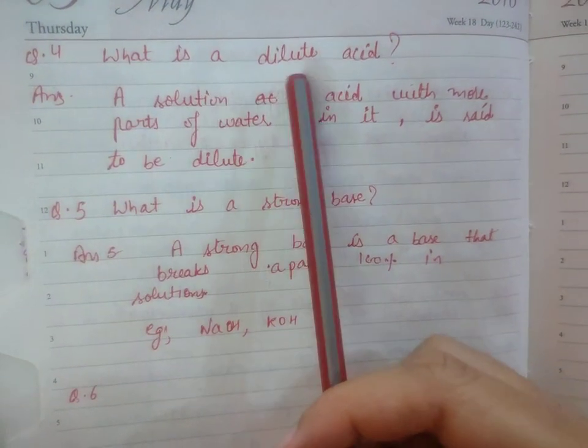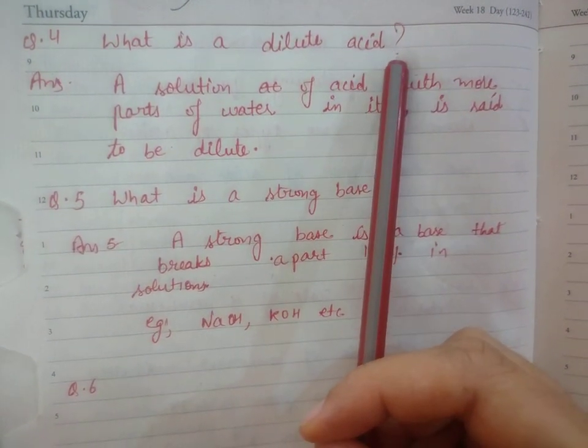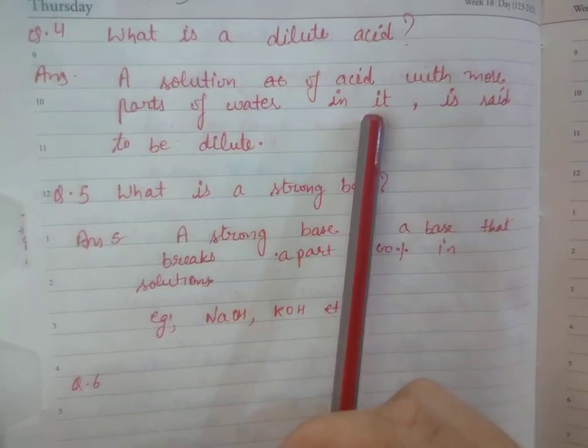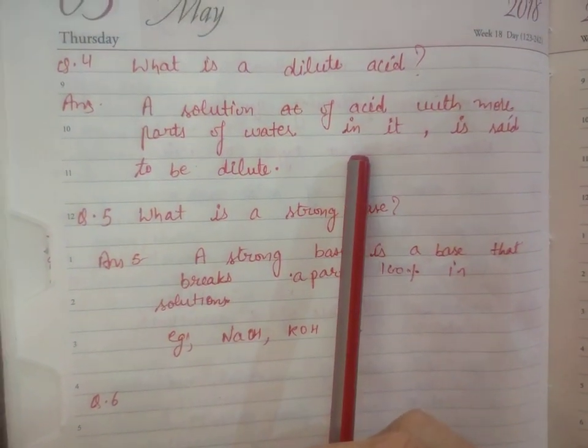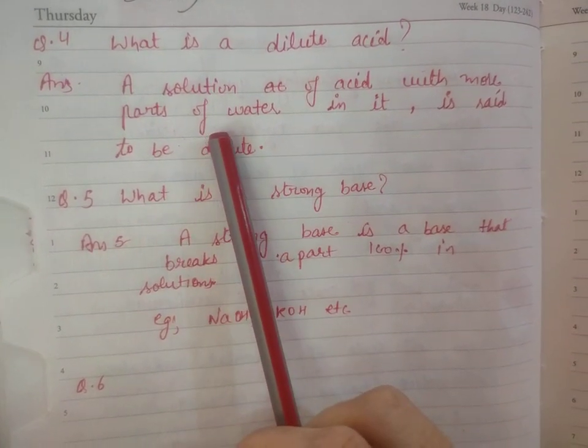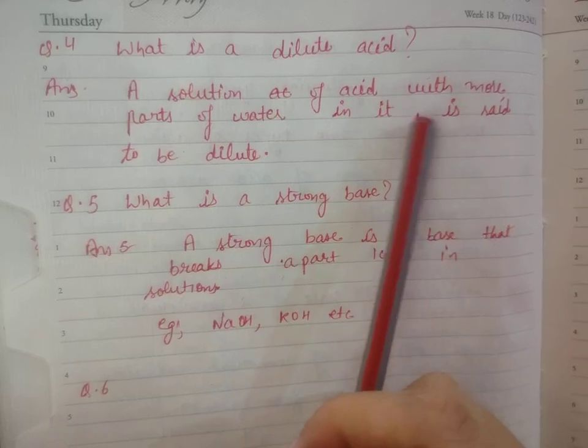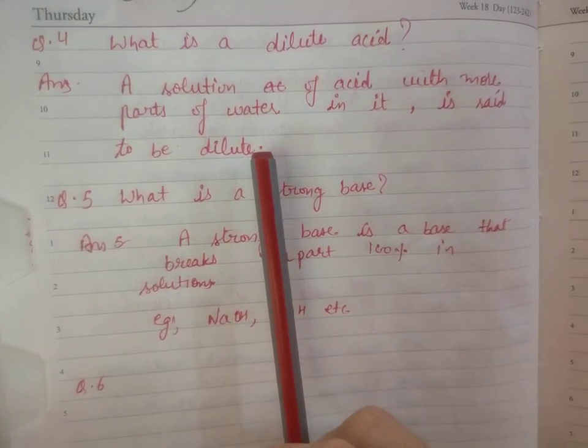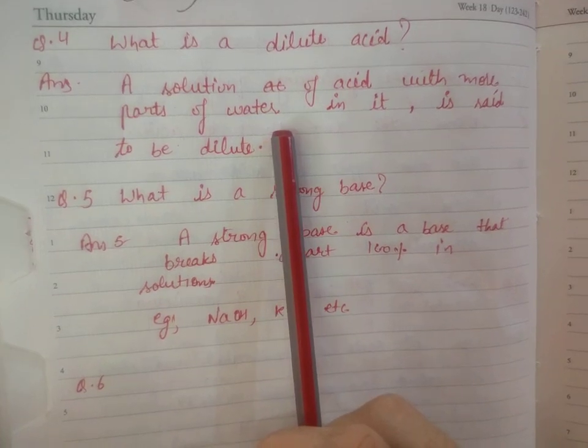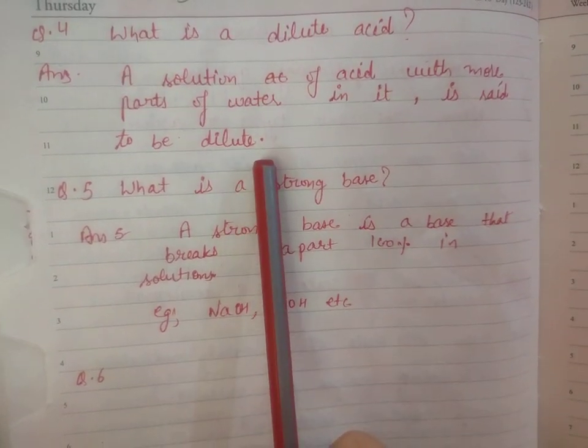Then fourth question: What is a dilute acid? A solution of acid with more part of water in it - when we make a solution of acid and water where both dissolve in each other, a solution of acid with more water is called a dilute solution.